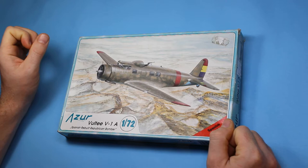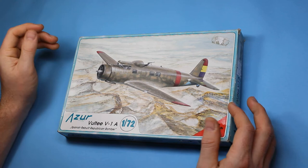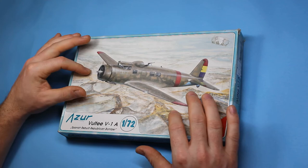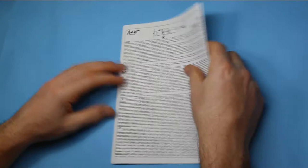So this is a quick in-box review of the Azure VOLTE V1A bomber in 1/72nd scale, which was used by the Spanish Republican Air Force. It says a rebuilt Republican bomber so I expect they probably did slight conversion to it, different engine or something that made sense whilst in Spain.